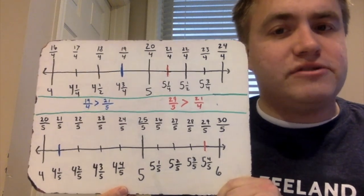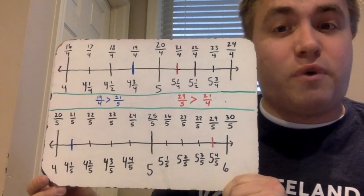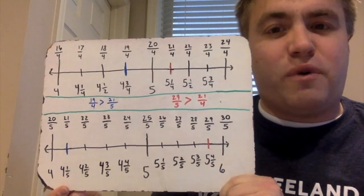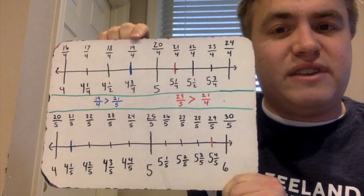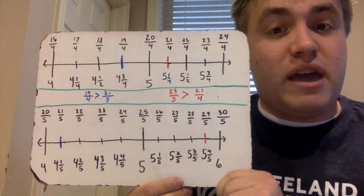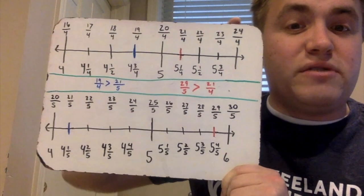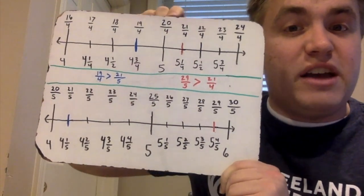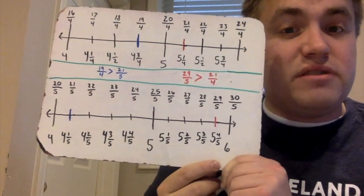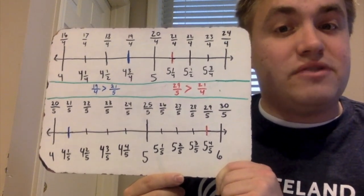If I want to compare two different fractions, I can just look at the two number lines right next to each other. So if I have 19-fourths, which is right over here, and 21-fifths, which is all the way over here, I know that 19-fourths is greater than 21-fifths because 19-fourths is further down the number line. Similarly, if I have 29-fifths and 21-fourths, 29-fifths is greater than 21-fourths because it is further down the number line — 29-fifths is all the way down here, and 21-fourths is further back, closer to five than to six, while 29-fifths is closer to six. So I would also say that 21-fourths is less than 29-fifths.